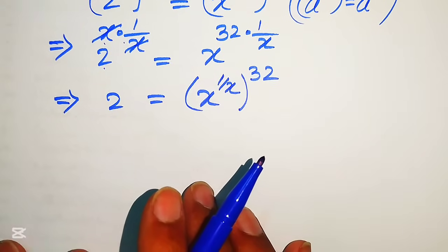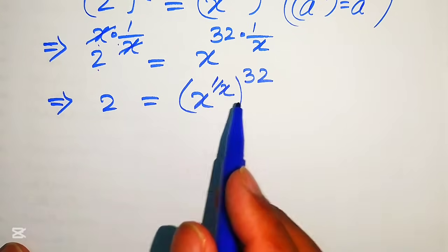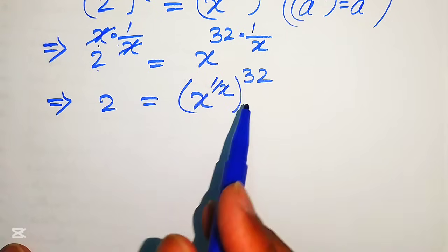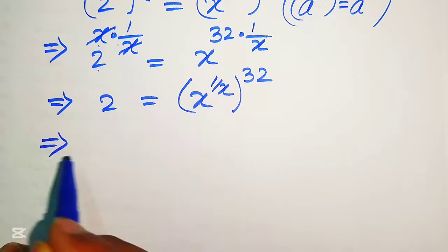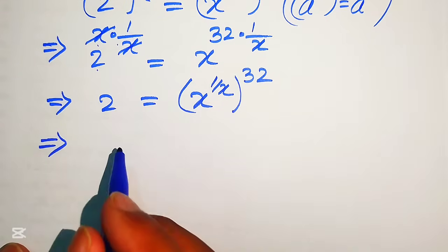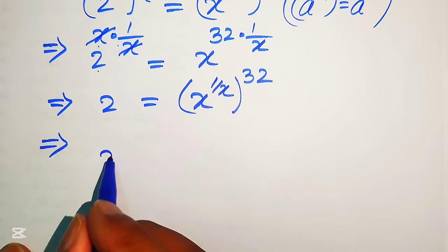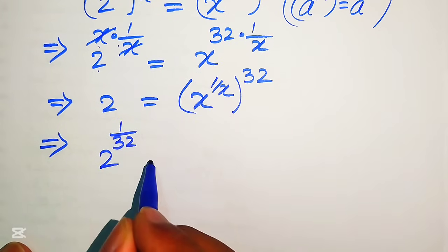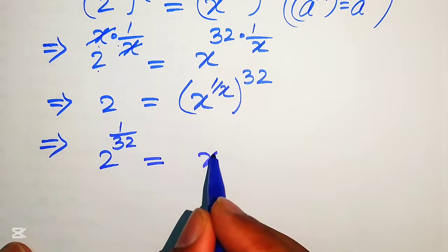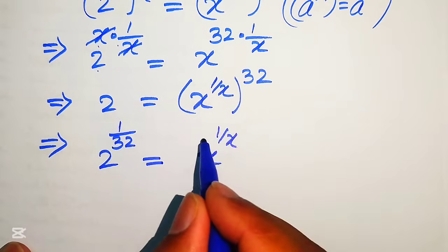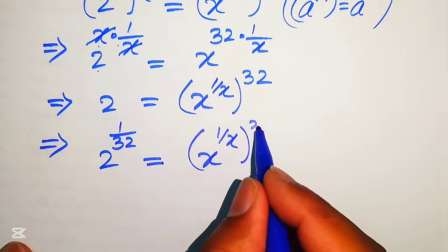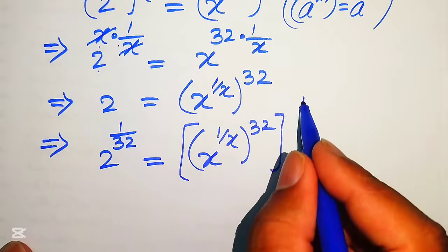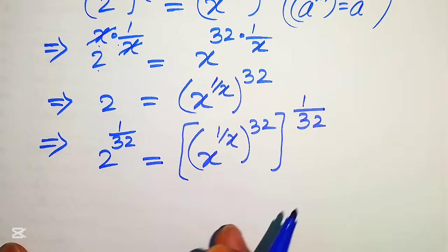Our next step is to move 32 to the left hand side. To eliminate 32 from the right hand side, we take the 1 over 32 power on both sides. It will be written as x to the power of 1 over x, and its whole power is 1 over 32, taking the 32nd root on both sides.